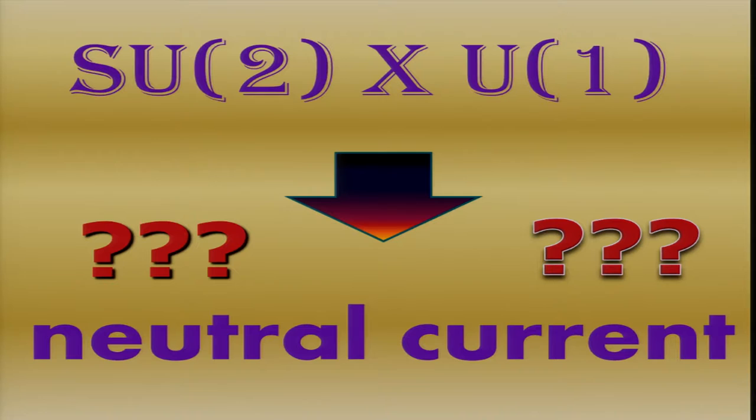Now with SU(2) times U(1), you have four gauge bosons, two charged ones and two neutral ones. One neutral one is identified with a photon. There's some mixing going on. And the other one must be another neutral particle which causes a neutral current. But neutral current didn't seem to exist. John Bell, for example, at CERN argued all the time that because we don't see it in kaon decay, there shouldn't be any neutral currents.